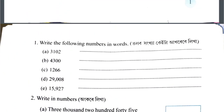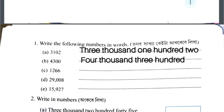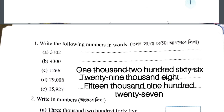Now I will write in English. If you have to write in English, you can write the following numbers in words. Write in words: 3,102. B number 2 is 4,300. C2 is 1,266. D2 is 29,008. And E2 is 15,927.